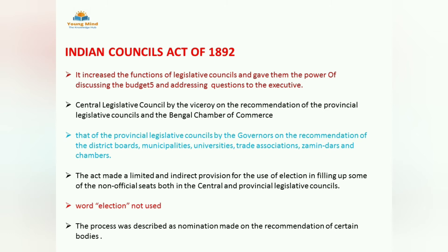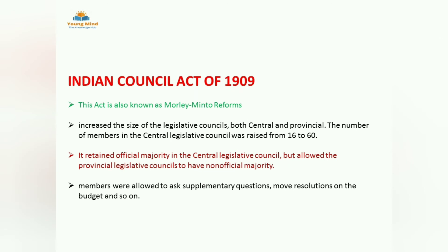The next is the Act of 1892 — not a very important act. Here the legislative council got the power of budget discussion and addressing questions. Till now they did not have this power. The British didn't want to repeat mistakes like the 1857 revolt, so they started recognizing boards, institutions, and other organizations, trying to build the confidence of people. They started adding non-official members, but the word 'election' was not used anywhere — instead the process was described as a nomination made on the recommendation of certain bodies.